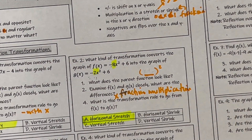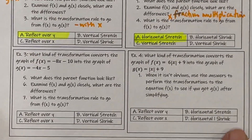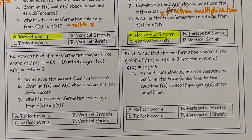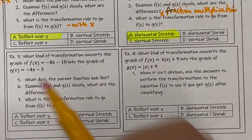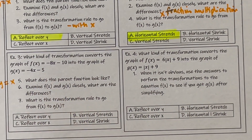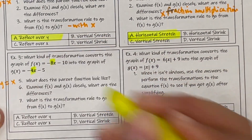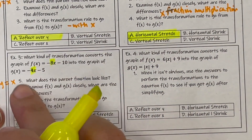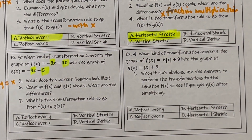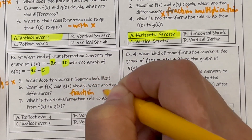If you are not following, go back and learn the rules. Example three: what kind of transformation converts this to this? The parent graph is linear — Y equals X. Examine them closely. It looks like it goes from eight to four, and also from 10 to five — so it got smaller by multiplication. It's a fraction multiplication.